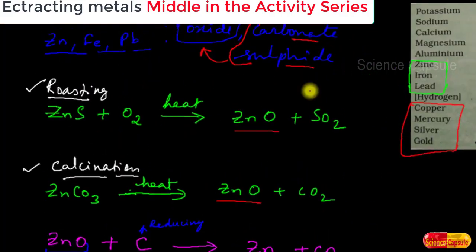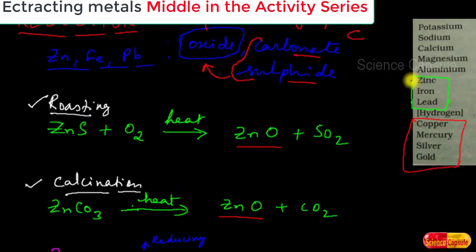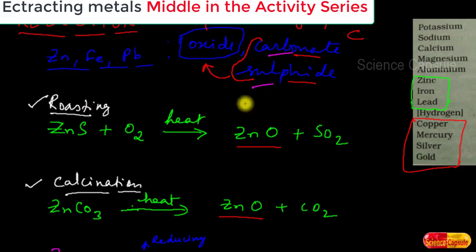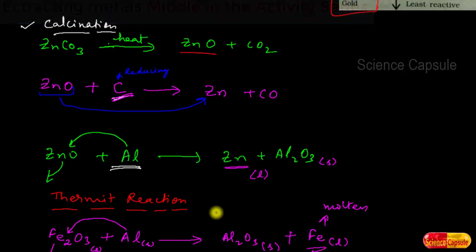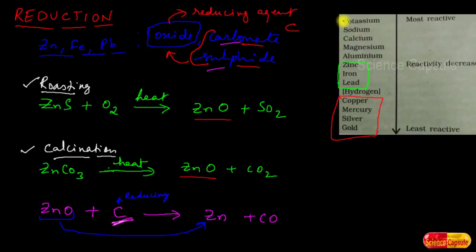To summarize the reduction of middle-activity-series metals: if the ore is carbonate or sulphide, roasting or calcination is first used to convert it to oxide ore; then a suitable reducing agent like carbon reduces it to the metal. Alternatively, displacement reactions using more reactive metals can also be employed.